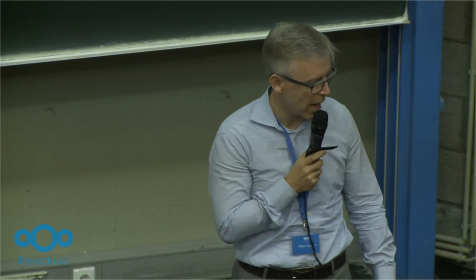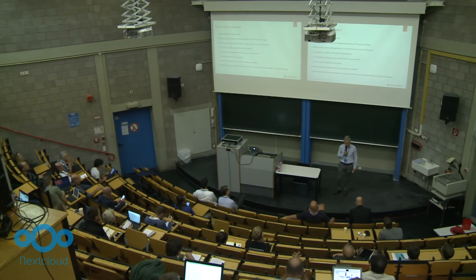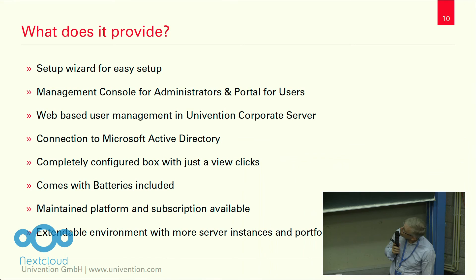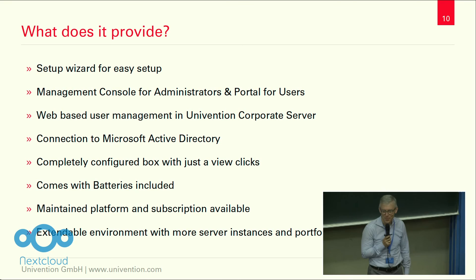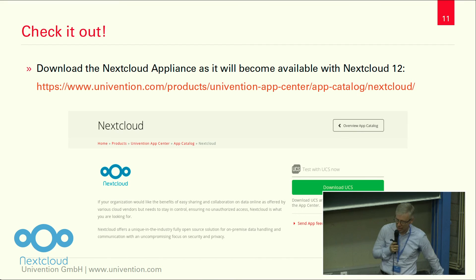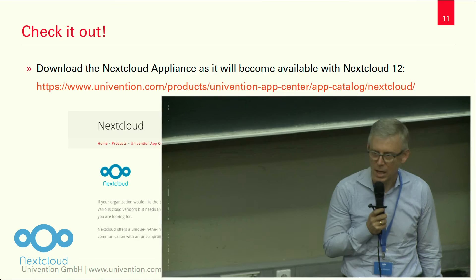Yeah, what does it provide? You can join it into your Active Directory domain if you have one, so you can allow your users to use the credentials they use in the Active Directory environment already to access NextCloud and other apps installed on the Univention server. It comes with batteries included - everything is in there. So, that's all from me for now. Go to our website, search for NextCloud to see when it's available, or give me your card or your email address after this talk, and we will be happy to send you a pointer and a personal notification as soon as this is available.